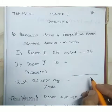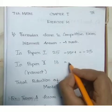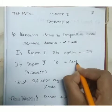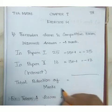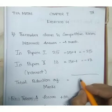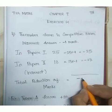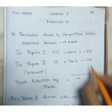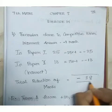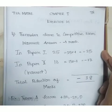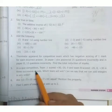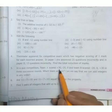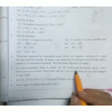Now the incorrect answers we add together: minus 25 plus minus 13. Add them together, 5 plus 3 is 8, 2 plus 1 is 3, so 38. Minus 38 marks is the total reduction of marks.